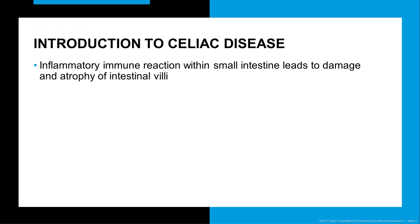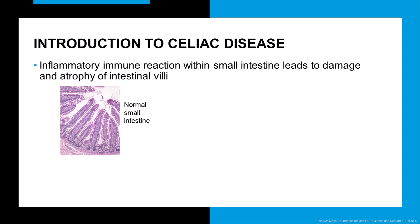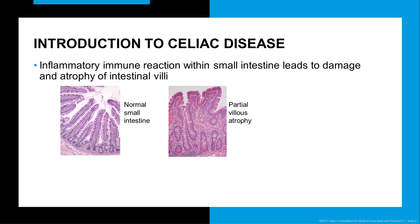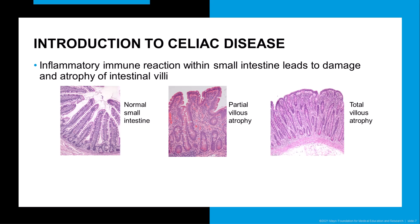The clinical symptoms of celiac disease result from damage to the small intestinal villi caused by an inflammatory response by the patient's immune system. In the figure to the left, you see a biopsy of a normal small intestine with intact villi. In the middle and right figures, you see the partial and total villus atrophy that can occur in celiac disease.